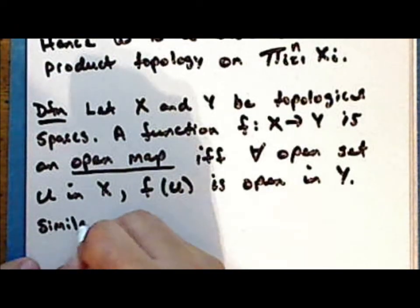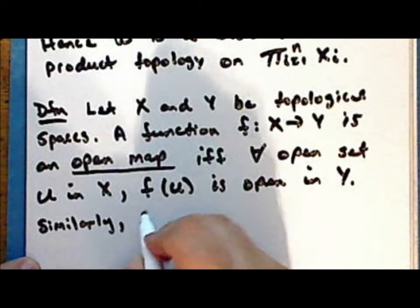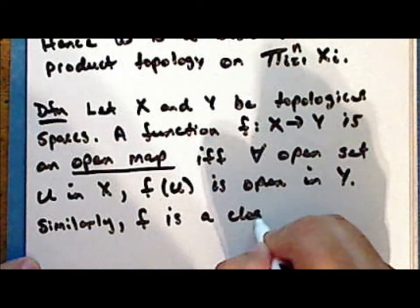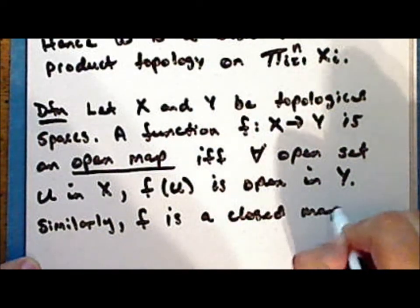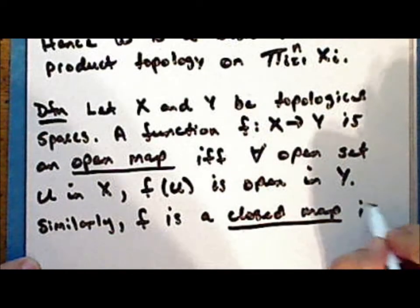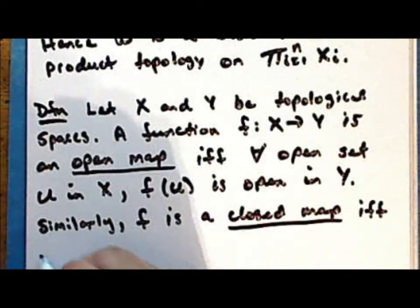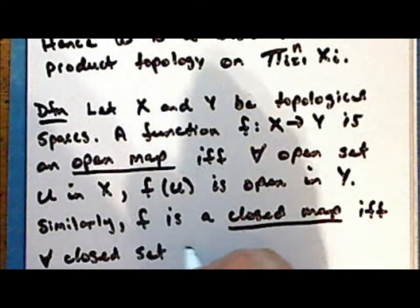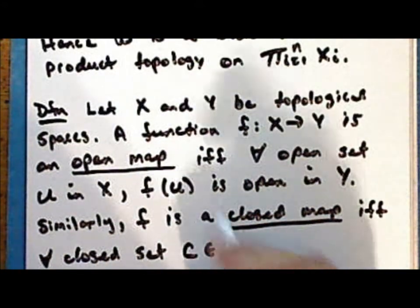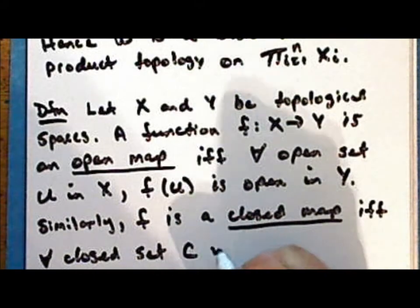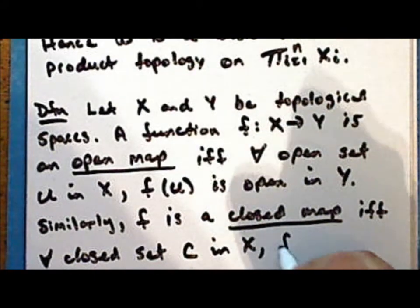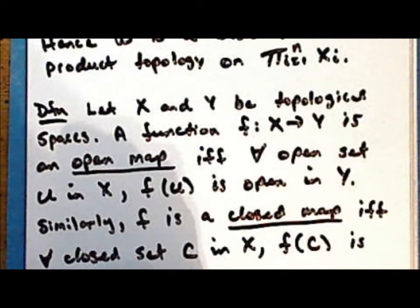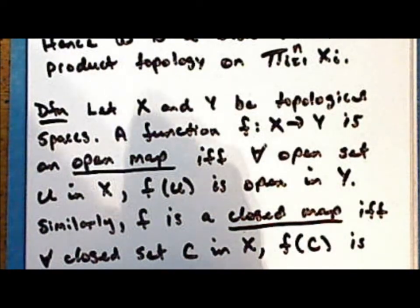Similarly, the function f is a closed map if and only if for every closed set C in the space X, the direct image of that set is closed in the space Y.